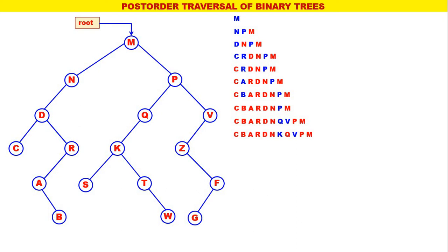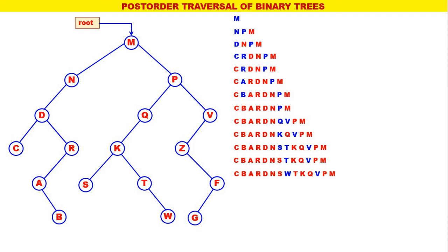Now the leftmost is K. The post-order for K is S, T, K — with K processed. K is replaced by S, T, K with K processed. Now the leftmost is S. The post-order for S is S only, with S processed. Next, the leftmost is T. The post-order for T is W, T — with T processed. Therefore, T is replaced by W, T with T processed.